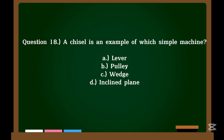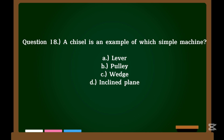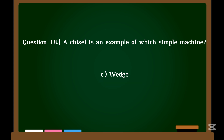Question 18. A chisel is an example of which simple machine? A. Lever. B. Pulley. C. Wedge. D. Inclined plane. Correct answer: C. Wedge.